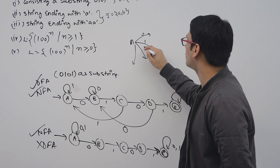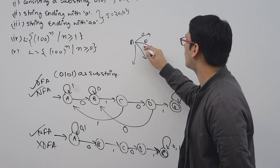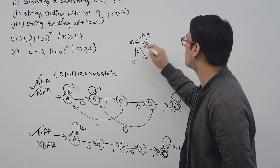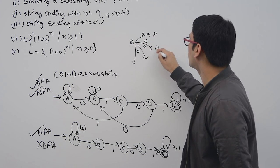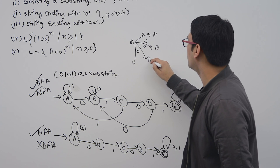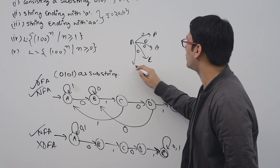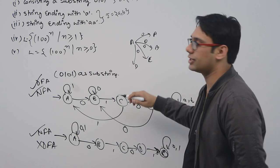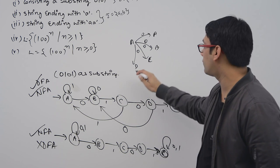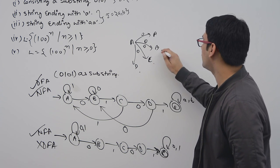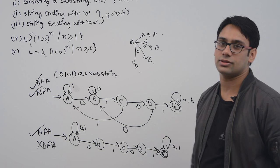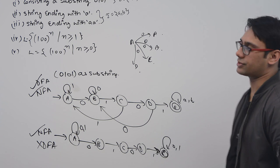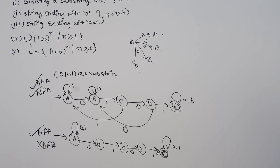For example, after seeing the symbol 0, you can go to state A, you can go to state B, you can go to state C, or you can go to state D. If any one of these states is a final state, that means the string is accepted.